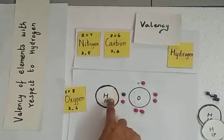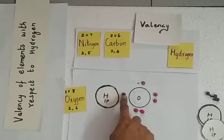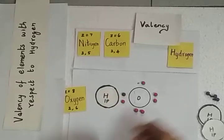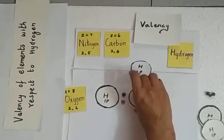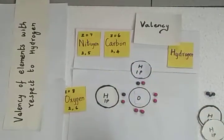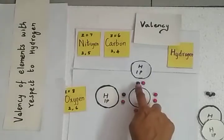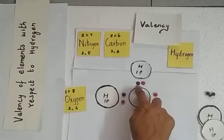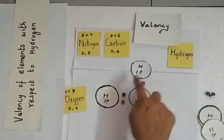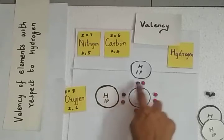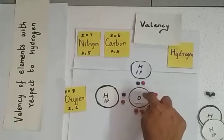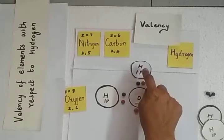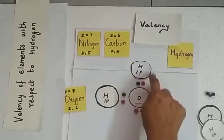I am representing the valence electron of hydrogen — that one electron — with a purple bead. Another hydrogen atom will also combine, sharing one electron with oxygen. So oxygen has combined with two atoms of hydrogen to complete its octet configuration, and each hydrogen has also completed its stability with 2 electrons in its K shell.